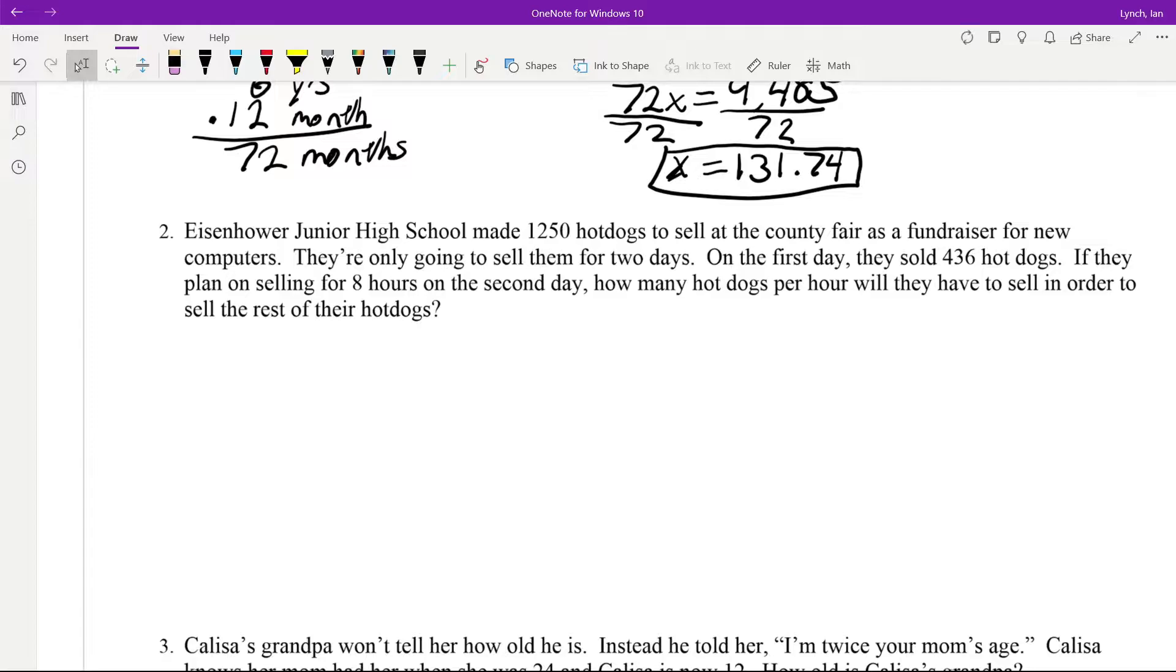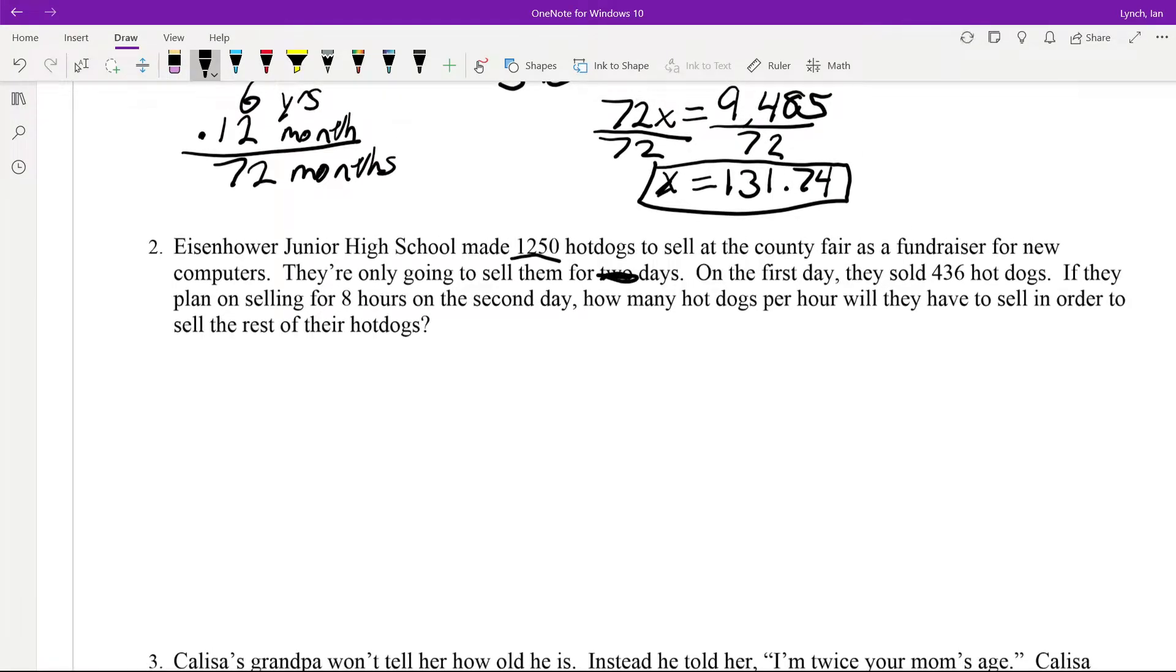This junior high school made 1,250 hot dogs to sell at the county fair as a fundraiser. They're only going to sell them for two days. On the first day, they sold 436. If they plan on selling for eight hours, how many hot dogs per hour would they need to sell the rest of their hot dogs?